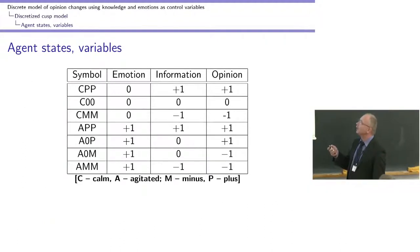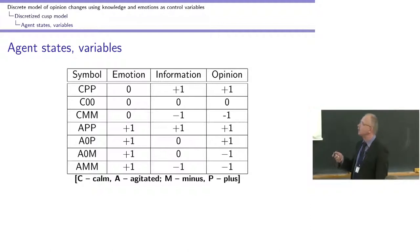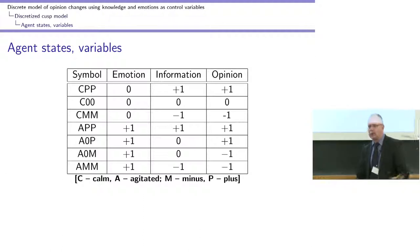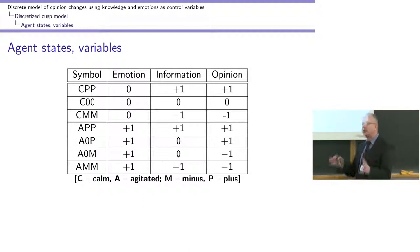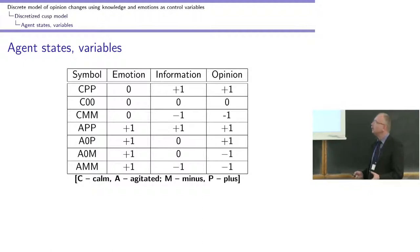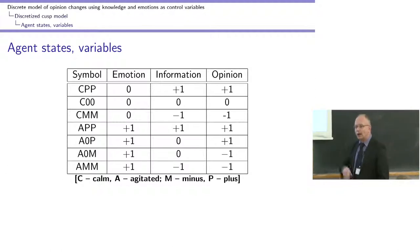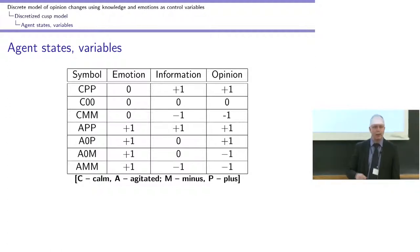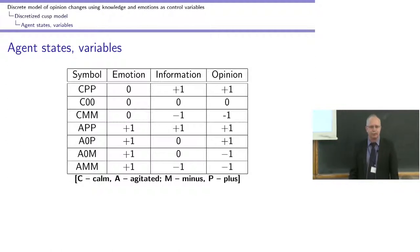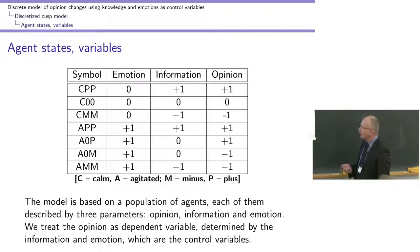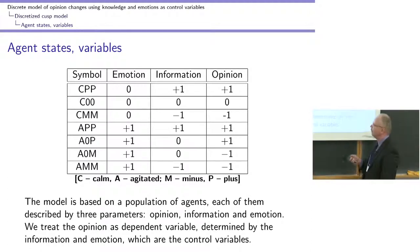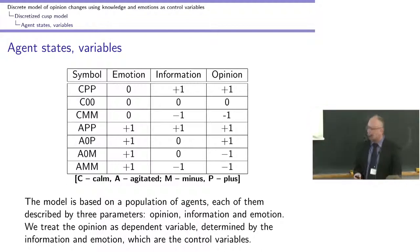The seven states: emotion zero for calm agents; for agitated agents, the arousal is plus one, with information plus one, zero, or minus one. For calm agents there is one-to-one correspondence between the information they have and the opinion they express — they are rational, they know how to reason and are not driven by emotions. However, for an agitated agent — and I believe many will agree — if you're agitated, you tend to have an opinion even without having the information about the case. Opinion is the dependent variable determined by information and emotion.